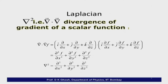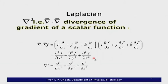Let me define the Laplacian using this operator. The Laplacian, written as del-squared, is del-dot-del. The second del being a gradient operator acts on a scalar function and gives a vector, on which del-dot or the divergence operates. So del-squared f = d²f/dx² + d²f/dy² + d²f/dz². This is called the Laplacian operator.